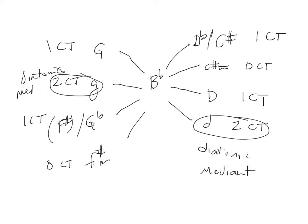Any other key that's left over is said to be a chromatic mediant. But of these chromatic mediants, one on each side has a special subdivision name: the doubly chromatic mediant, which is the one with zero common tones. C-sharp minor above is a doubly chromatic mediant, and F-sharp minor below is also a doubly chromatic mediant.